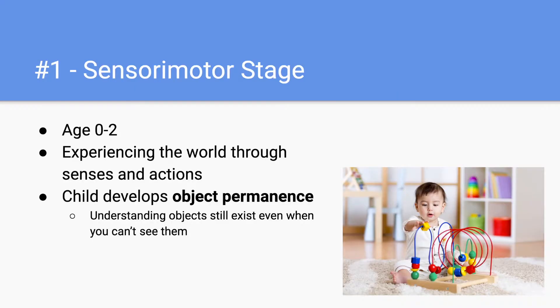Piaget's first stage is the sensorimotor stage, and this involves children from age zero to two. In this stage, children are experiencing the world through their senses and their actions, and this is when children begin to develop object permanence. Object permanence essentially means that children are understanding that objects still exist even when you can't see them.